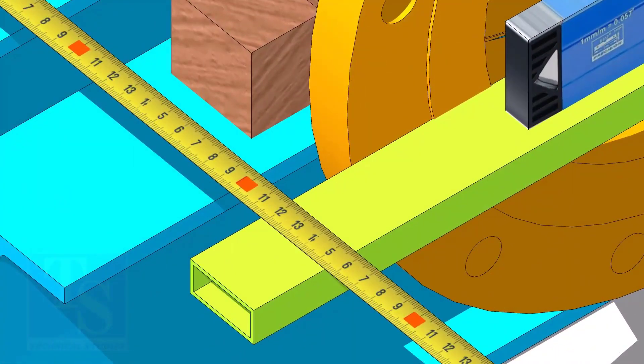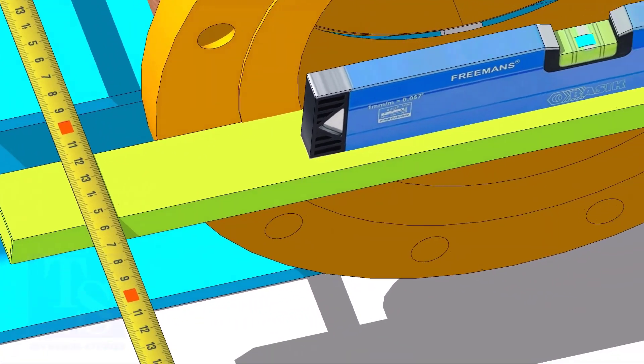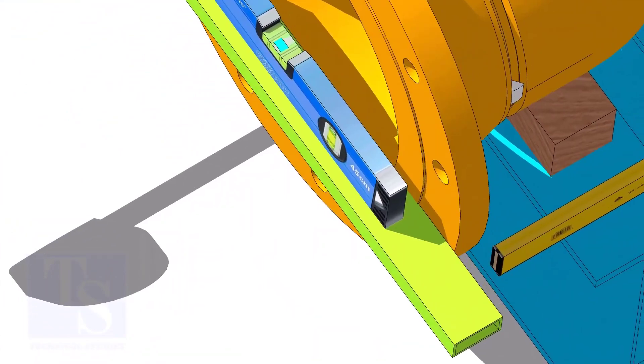Check the length of the spool on both sides. If the dimensions are equal or within acceptable limit, tack weld on both sides.